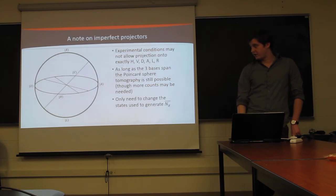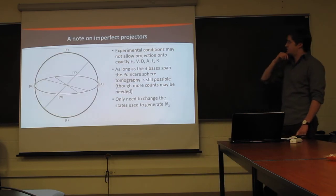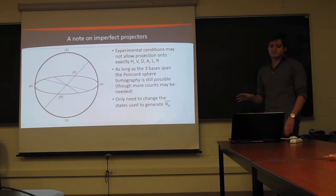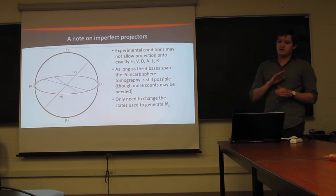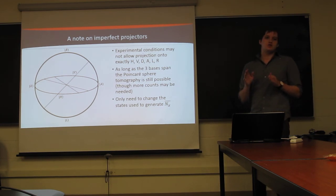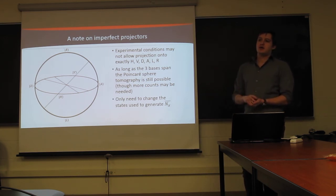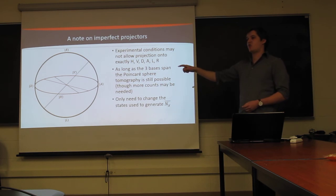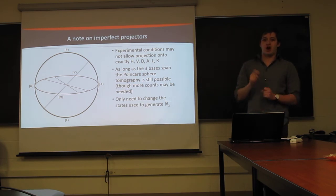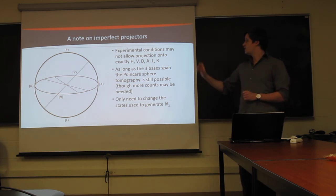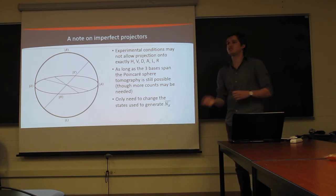So we're going to make a small digression here before we finish up states just talking about imperfect projectors. So if, say, your wave plates aren't perfect, you may not have exactly a half wave plate, exactly a quarter wave plate, then you're not going to actually be able to project exactly onto H, V, D, A, L, and R. But that's not really a problem. Because as long as the three bases you choose, as long as the six states you choose, can still span this Poincare sphere, that is as long as you can still write any state in the Poincare sphere as a linear combination of your states, then you can still perform a tomography.